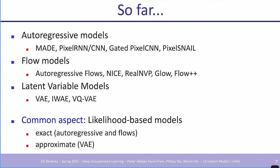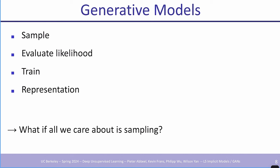So far in this course we've covered auto-regressive models, flow models, and latent variable models — all likelihood-based models where you optimize the log probability of your data. Today we're going to look at something different. What we want from a generative model is the ability to sample, evaluate likelihood, train well, and have a good representation. With GANs, the starting point is: what if all we care about is generating good samples?